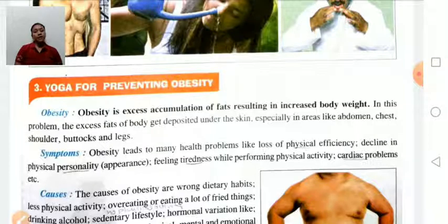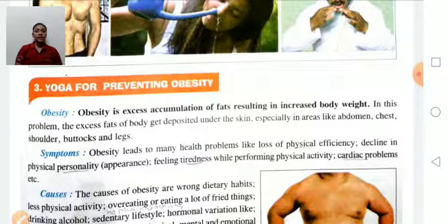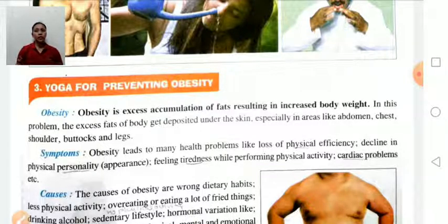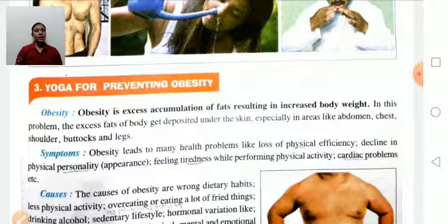We can find obesity through Body Mass Index (BMI), which is calculated as weight divided by height squared. If the person's BMI is 20 to 25, it means they are at a healthy weight. If the BMI is more than 30, it means the person is obese or overweight.